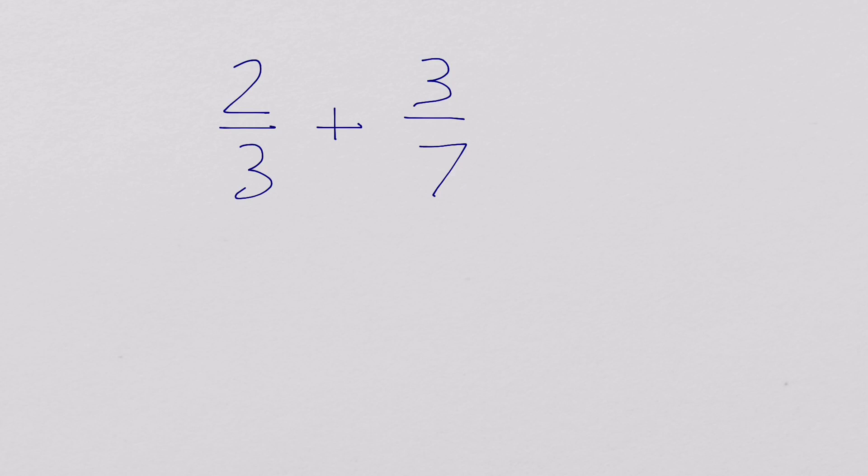In my previous videos, I've shown you how to add fractions with uncommon and unrelated denominators by creating equivalent fractions and then adding them together once you have a common denominator. We're kind of going to do that today, but I'm going to show you what some people feel is an easier way to get your equivalent fractions and your common denominator.